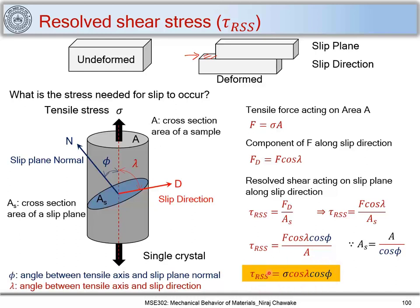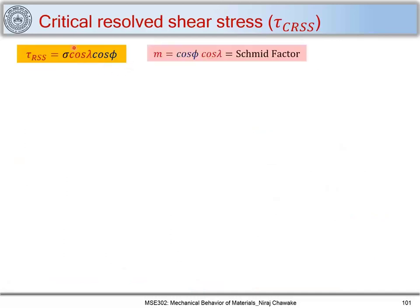By this relation we can relate tau_RSS — the resolved shear stress acting on any slip plane — with the applied normal stress sigma, provided we know angles lambda and phi that the slip system makes with the tensile axis. We replace cos(phi) × cos(lambda) with M, which is called the Schmid factor. There are two special conditions or situations I would like to discuss.